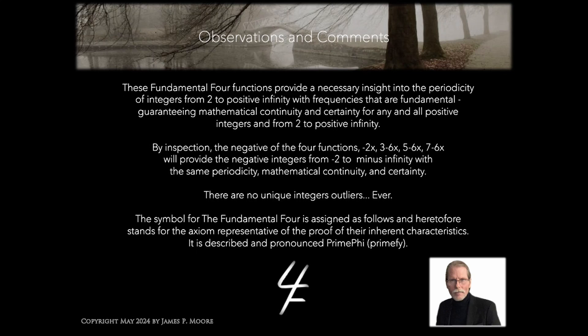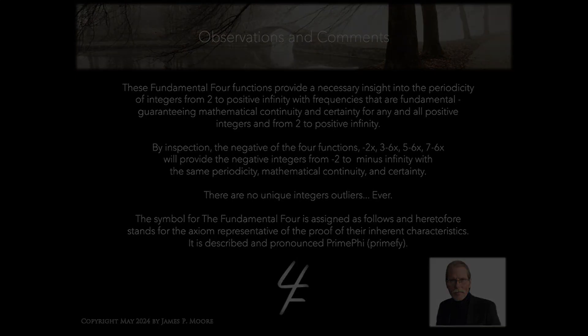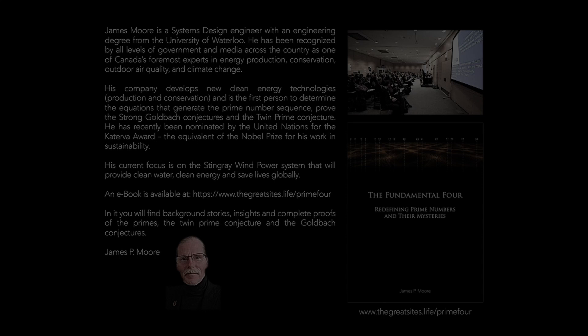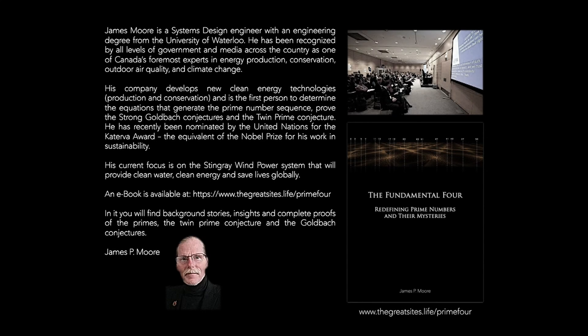One of the most significant achievements stemming from this framework is the proof of the twin prime conjectures, which we will highlight in a subsequent video. This conjecture, which dates back to Euclid around 300 BC, posits that there are infinitely numbered pairs of prime numbers that differ by 2. Examples are 3 and 5, 5 and 7, 11 and 13, 17 and 19, etc.